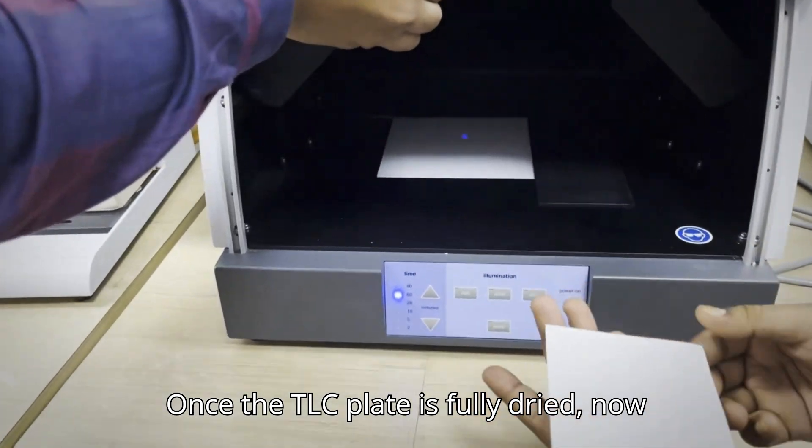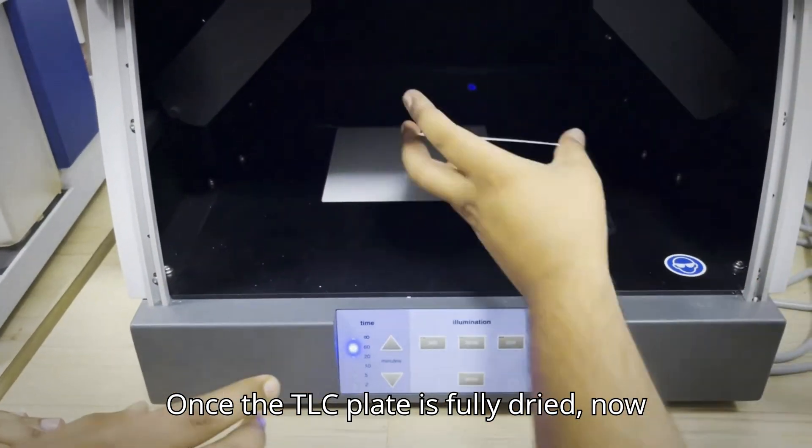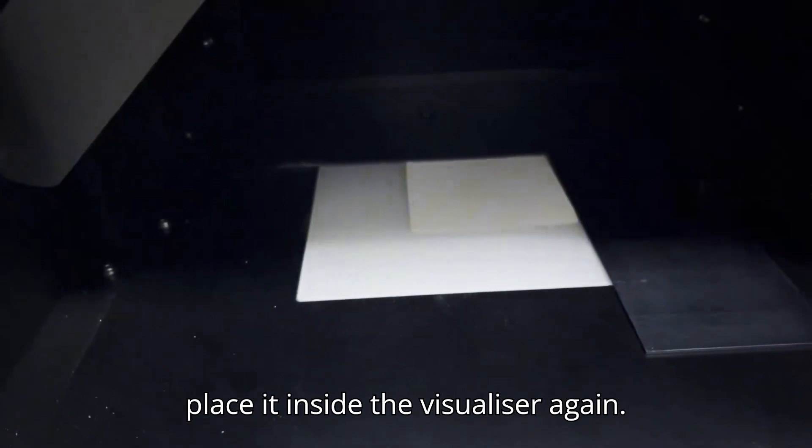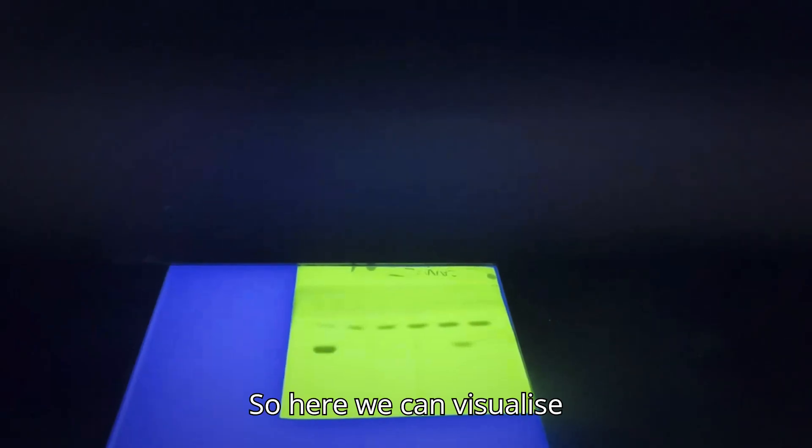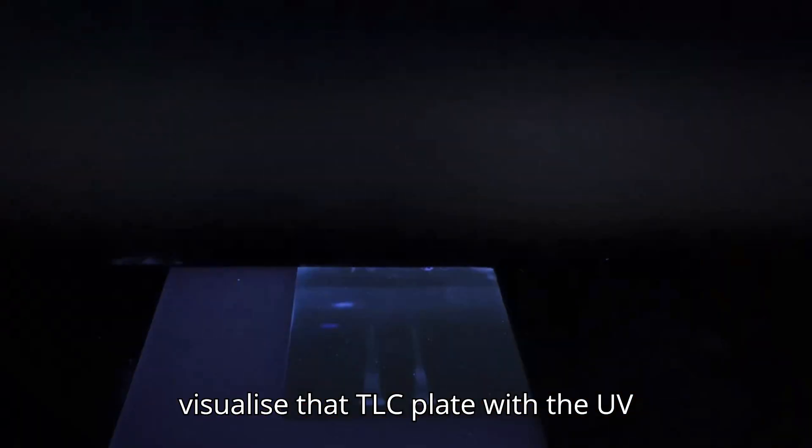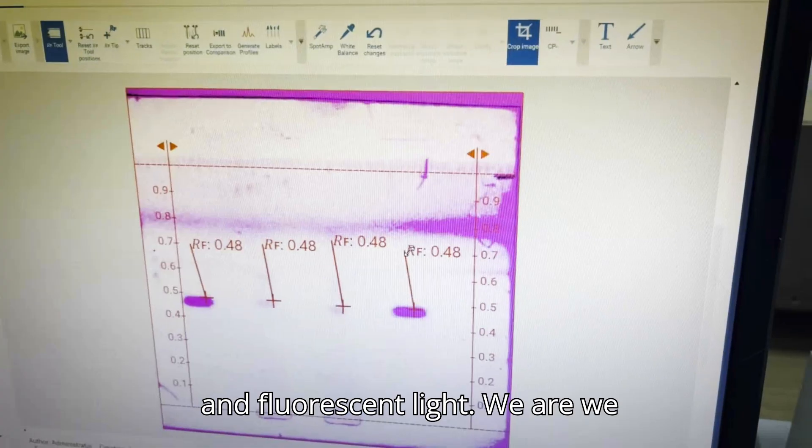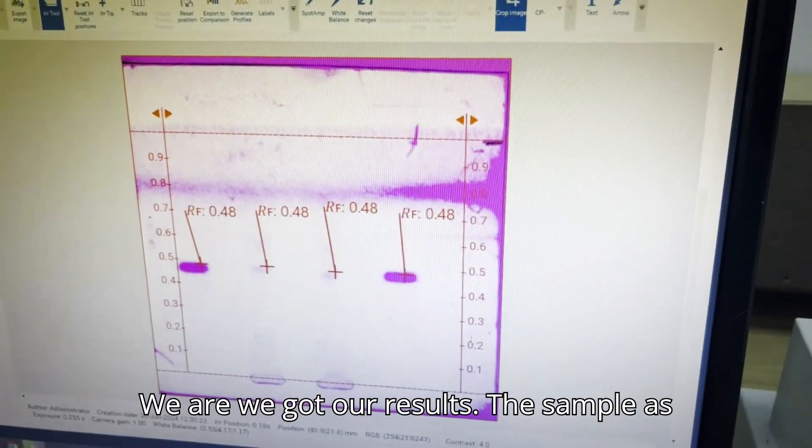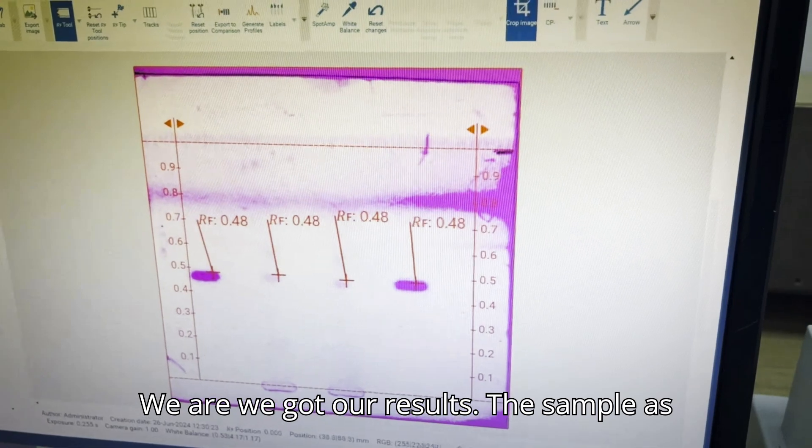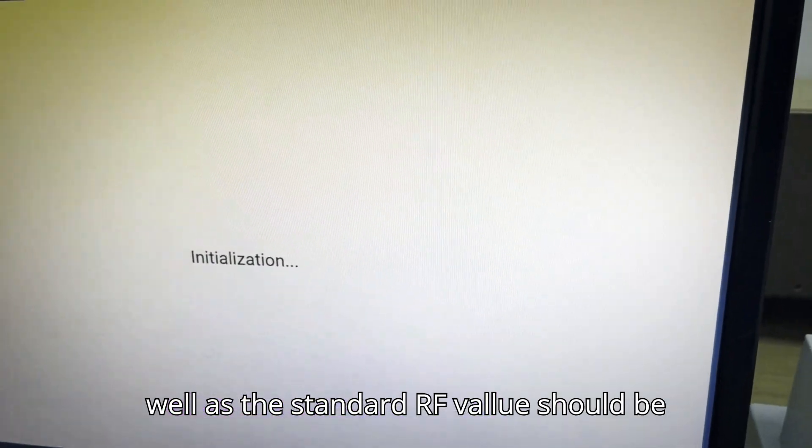Once the TLC plate is fully dried, now we will place it inside the visualizer again. Here we can visualize the TLC plate with UV, visual and fluorescent detector. Here we got our results. The sample as well as the standard RF value should be equal.